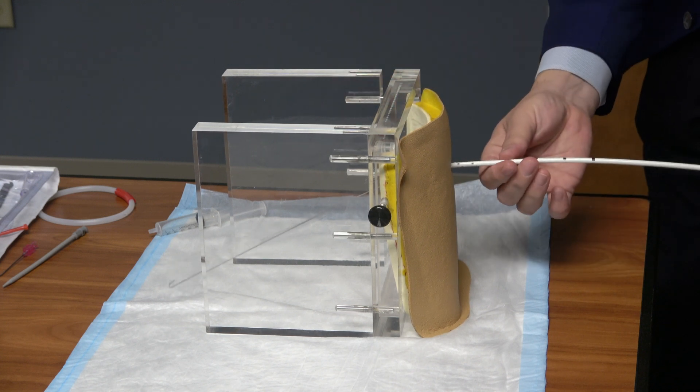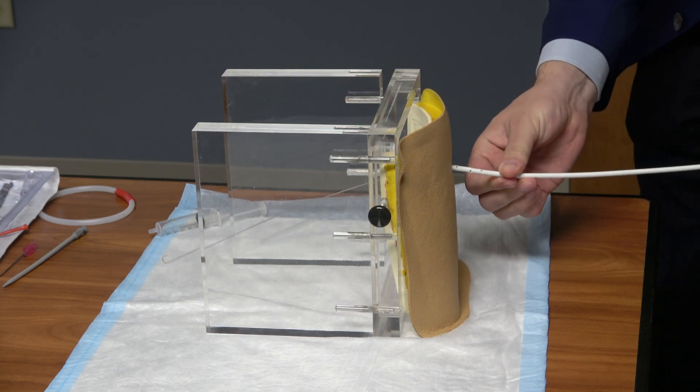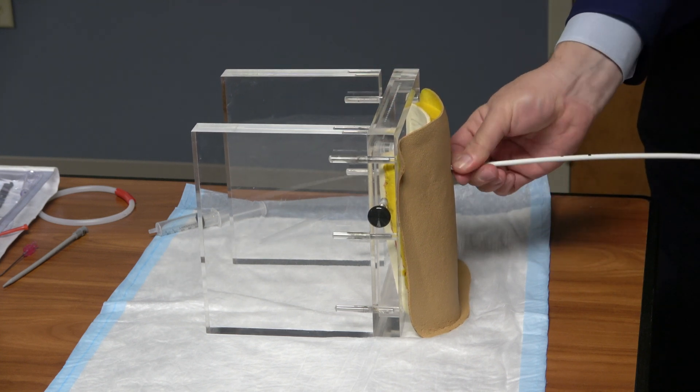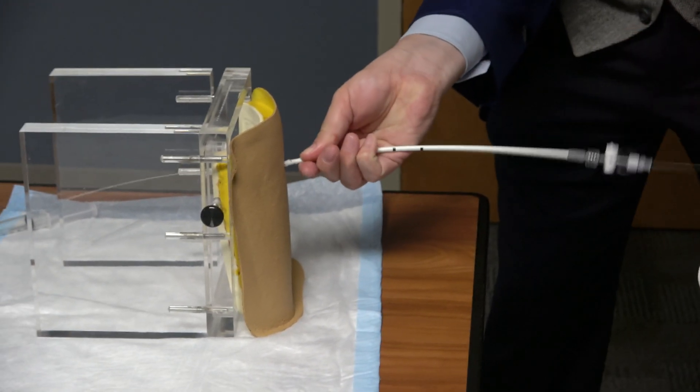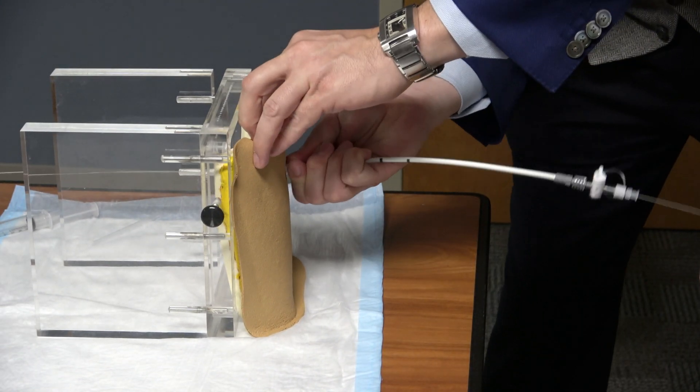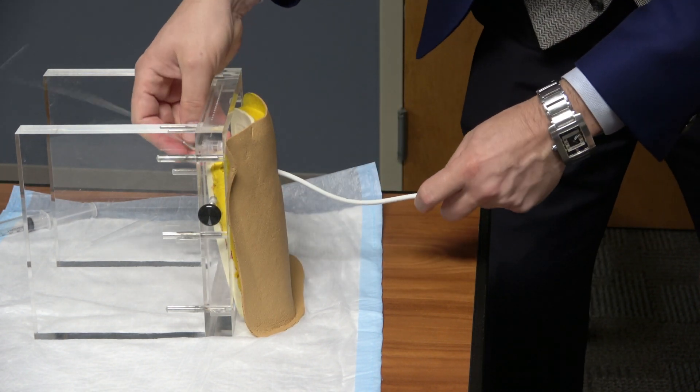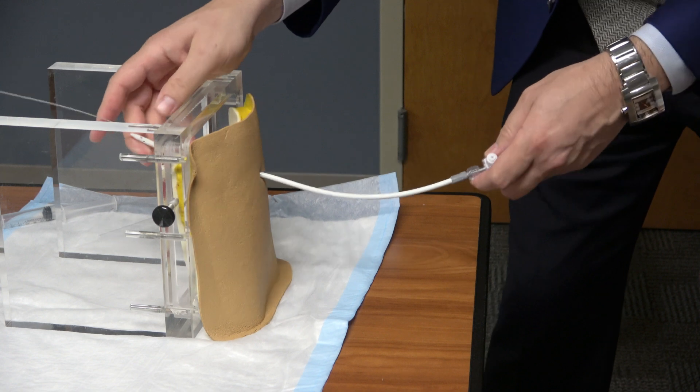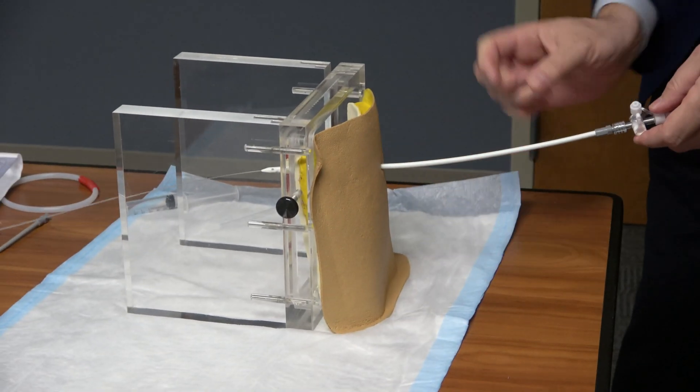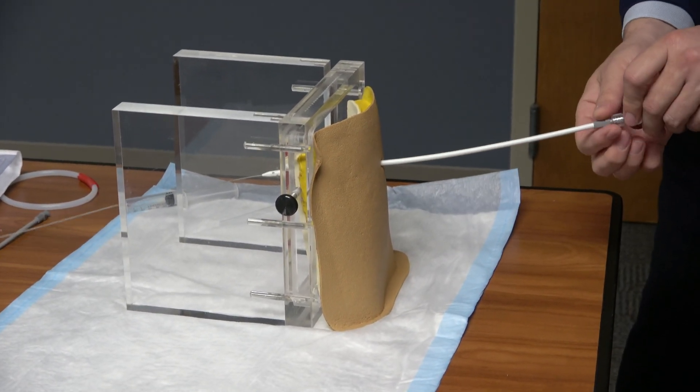Now I turn it 180 degrees, so the tip will go up. You can see how the tip will go up. So it will go up to the apex to drain the air. Now that I just have to pass the width of the chest wall.